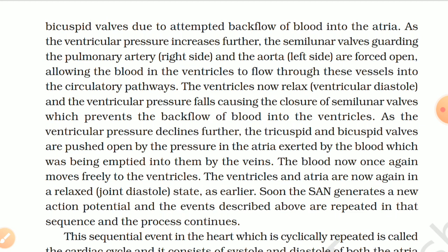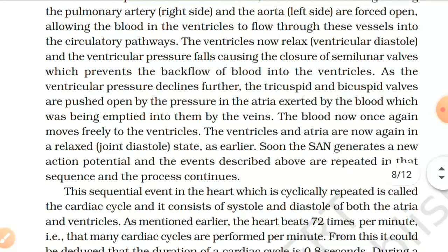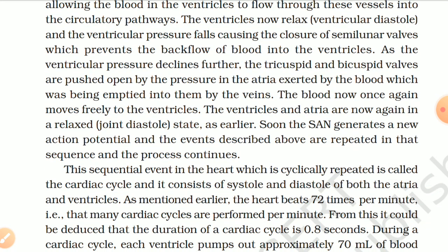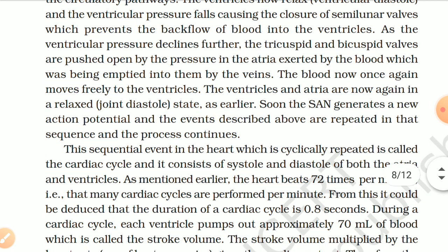The ventricles then relax — ventricular diastole — and ventricular pressure falls, causing closure of the semilunar valves, which prevents backflow of blood into the ventricles. As ventricular pressure declines further, the tricuspid and bicuspid valves are pushed open by the pressure in the atria, and blood moves freely into the ventricles once again. The ventricles and atria are now again in a relaxed joint diastole state, and soon the SA node generates a new action potential, repeating the sequence.